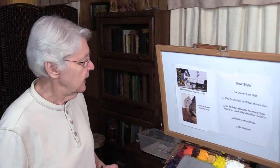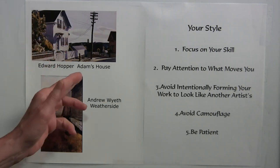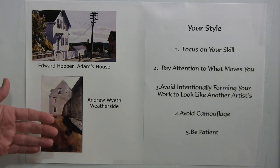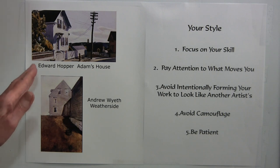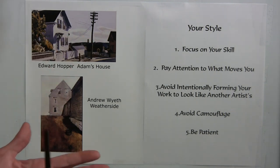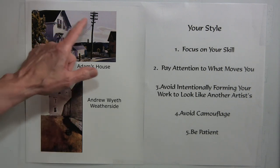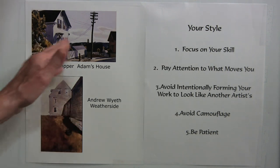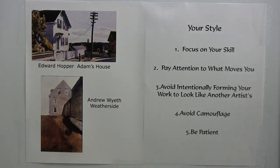Before I get into that, I just want to take a look at two paintings — one done by Edward Hopper, one done by Andrew Wyeth — of a similar subject. They're both houses, but when you look at them, you can see the style is really different. And if you started analyzing that style as to brushwork, you might say there's similar brushwork, maybe a little different texture in places, but another painting of Hopper's might have a little bit of texture, so the style couldn't be based on that, could it?